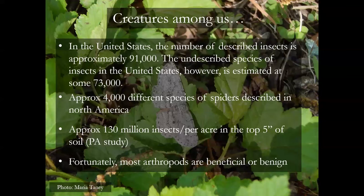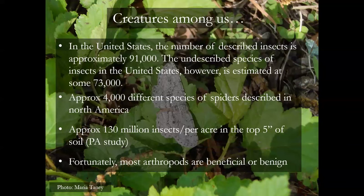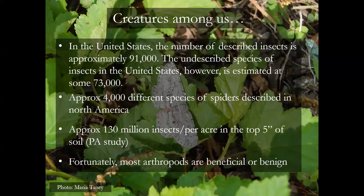Creatures among us. There are an awful lot of insects in the world, and there's almost as many undescribed insects as there are described insects. 4,000 different species of spiders in North America. Just the top five inches of soil in Pennsylvania contains 130 million insects per square acre. This tells us there are a lot of insects out there in our gardens, fields, and forests. It also tells us there is so much we don't know — I have been studying insects for a very long time and have done my best to identify the really interesting insects you folks sent me photos of.